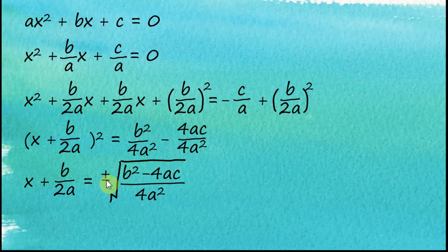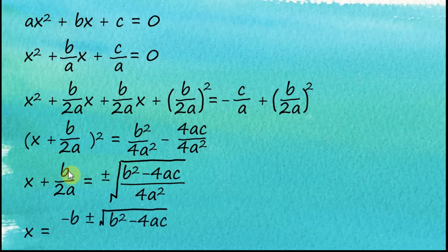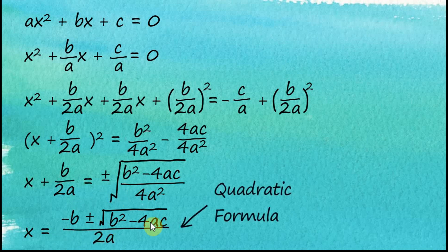After applying the square root, the right side becomes plus or minus the square root of that whole expression. We then move positive b over 2a to the right-hand side, making it negative b over 2a. The square root of 4a² equals 2a, so after applying the square root the denominator becomes 2a on both terms. Therefore x equals negative b plus or minus the square root of b² minus 4ac, all over 2a. This is the quadratic formula.